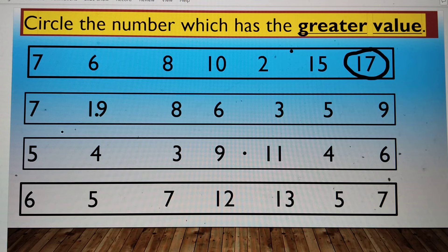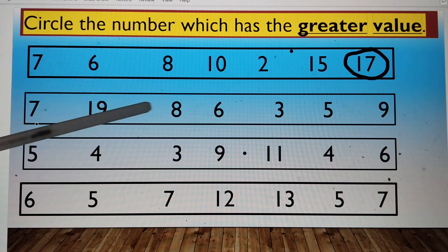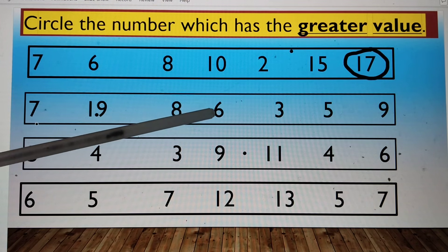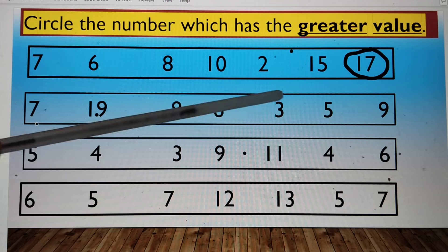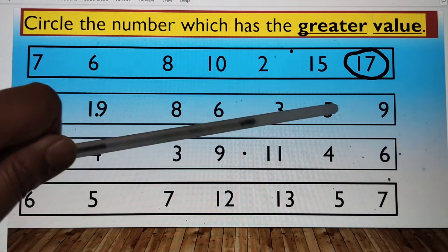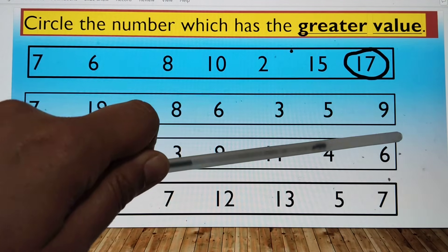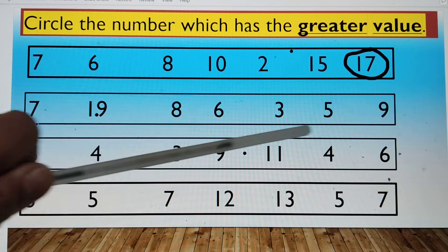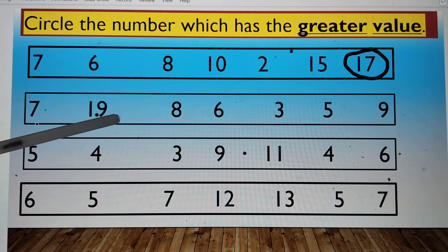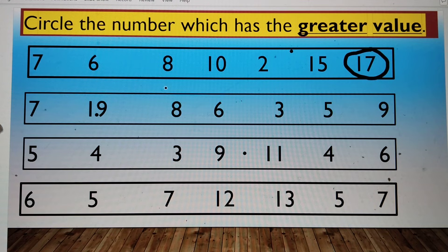In the next series, this is number 7, number 19, number 8, number 6, number 3, number 5, number 9. So the greatest number is 19. We will circle this out.